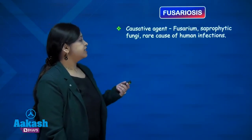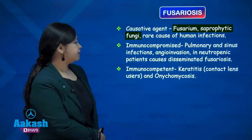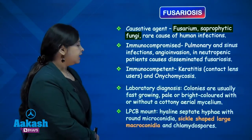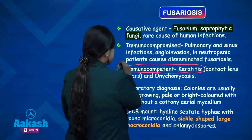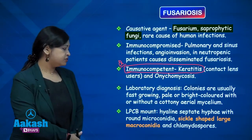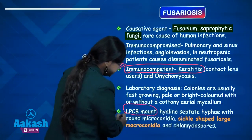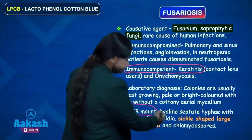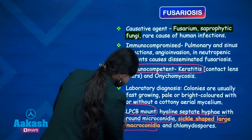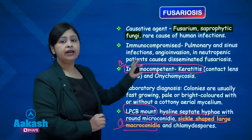Last, fusariosis. The causative agent is Fusarium, a saprophytic fungi and a very rare cause of human infections. In immunocompromised patients, pulmonary and sinus infection occur; invasion occurs only in patients with neutropenia and severe immune deficiency. It can cause keratitis in immunocompetent patients and onychomycosis. On LPCB mount (lactophenol cotton blue), there are hyaline septate hyphae with round microconidia and sickle-shaped large macroconidia — sickle-shaped macroconidia should always suggest fusarium.